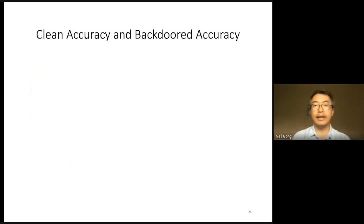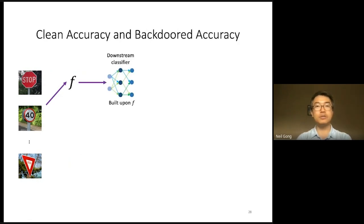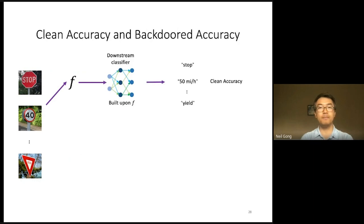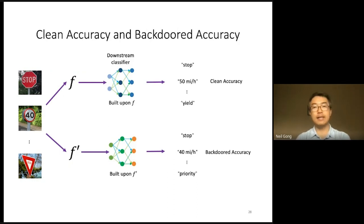We use clean accuracy and backdoor accuracy to evaluate whether our attack achieves the utility goal. Suppose we are given some clean test inputs. We first use the clean encoder F to produce their feature vectors, and then use a downstream classifier built upon F' to predict their labels. We define the clean accuracy as the fraction of test inputs that are classified correctly in this way. We also use the backdoor encoder F' to produce a feature vector for each test input, and then use a downstream classifier built upon F' to predict their labels, and we define the backdoor accuracy as the fraction of test inputs that are classified correctly in this way.